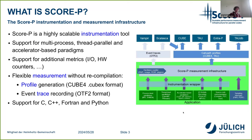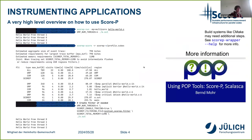So what is ScoreP? ScoreP is a highly scalable instrumentation tool. You are able to instrument your source code by using our compiler wrappers and enable certain adapters to get support for, for example, multi-process parallelism like MPI, shared-memory parallelism like OpenMP, or accelerators like CUDA, HIP and so on. You also have the option to enable collection of metrics like IO, hardware counters and so on. ScoreP has support for C, C++, Fortran, and Python via Python bindings.